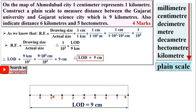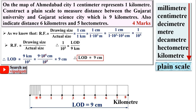Number the divisions 0, 1, 2, 3, 4, 5, 6, 7, 8 — always skip the first division and start numbering from left to right. Draw vertical lines from each point using a ruler. These divisions represent kilometers, so label it 'kilometer'. Now divide the first division into 10 equal parts, labeling 0, 5, and 10. Since 1 kilometer divided by 10 gives a hectometer, these subdivisions represent hectometers.